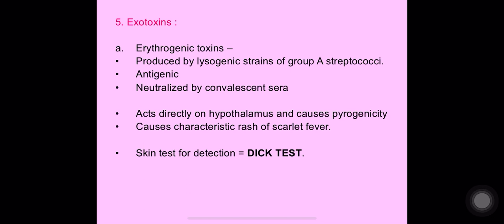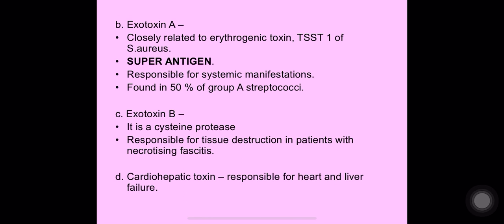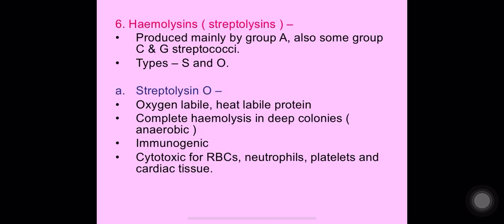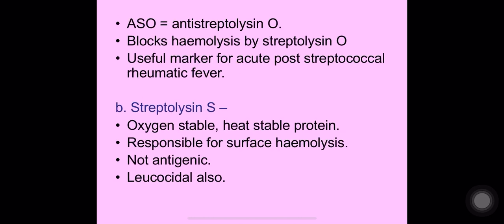Various exotoxins are produced by Group A streptococci, including exotoxin A (a superantigen), exotoxin B, and cardiohepatic toxin. Streptolysin O is oxygen-labile and heat-labile, leads to complete hemolysis in deep colonies, and is immunogenic. Streptolysin S is oxygen-stable, heat-stable, causes hemolysis on the surface, and is not antigenic. ASO stands for anti-streptolysin O.